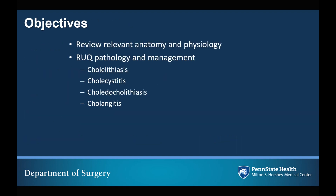After that brief review of the etiology of right upper quadrant abdominal pain, the objectives of this lecture are first to review the relevant anatomy and physiology of organs in the right upper quadrant, as well as to review right upper quadrant pathology and management — specifically cholelithiasis, cholecystitis, choledocholithiasis, and cholangitis.